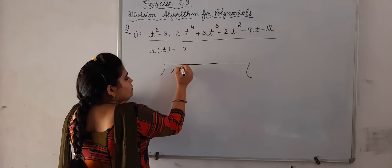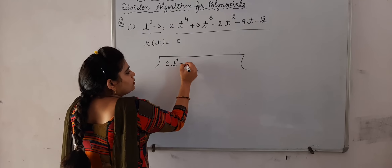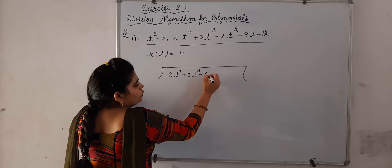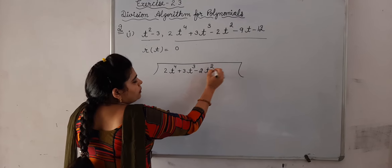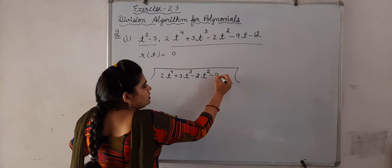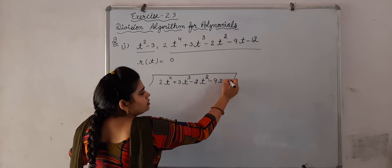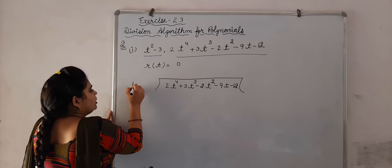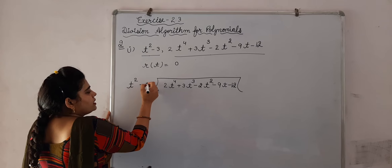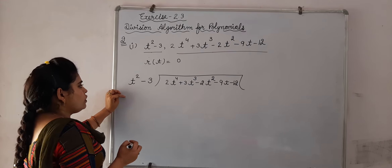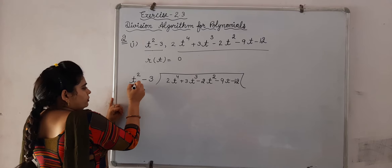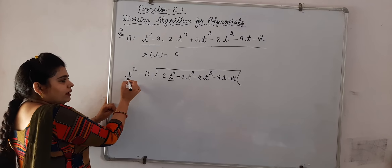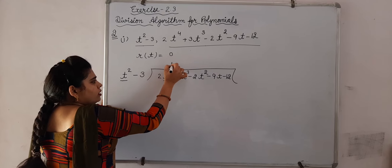We have 2t raised to power 4 plus 3t cubed minus 2t squared minus 9t minus 12. We have to divide it by t squared minus 3. First of all, compare these: this is t squared and here t raised to power 4, so we will multiply this t squared by t squared.